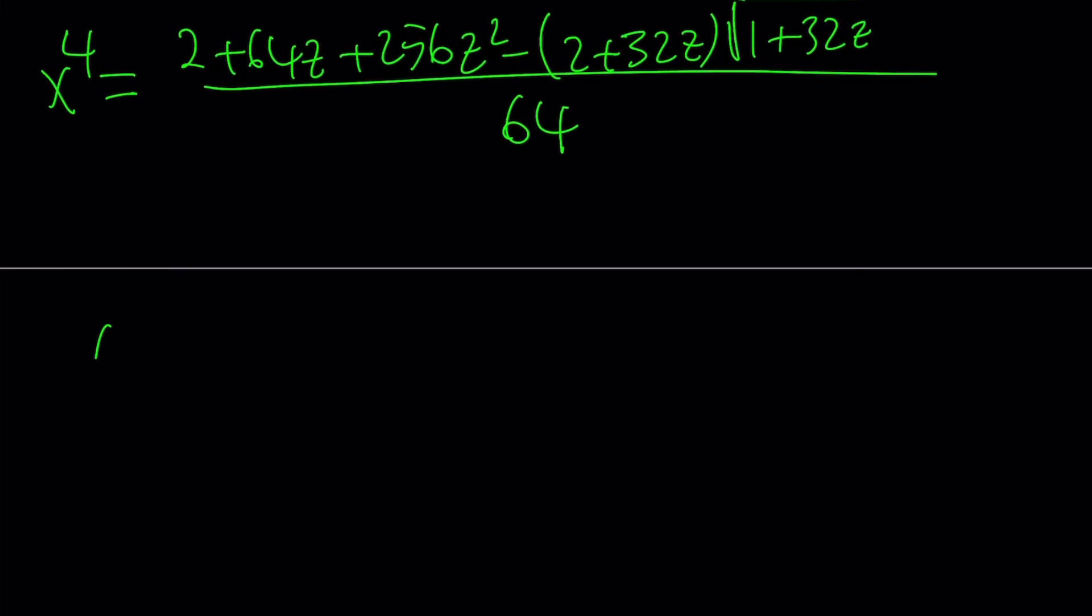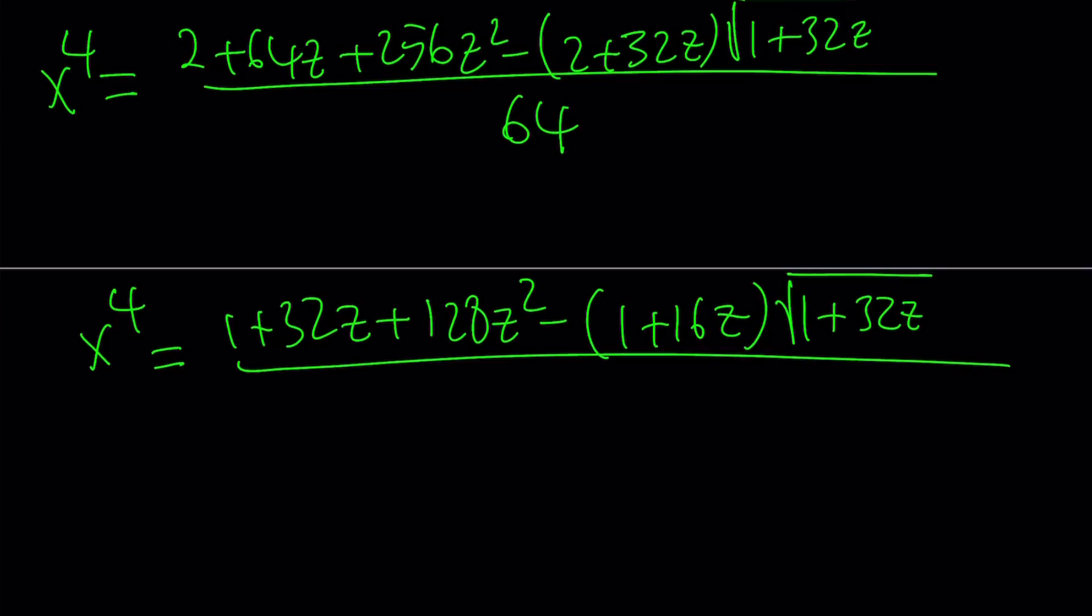This can be simplified. x to the 4th can be written as 1 plus 32z plus 128z squared minus 1 plus 16z, all multiplied by the square root of 1 plus 32z. I just multiplied the top and bottom by 2 and simplified my expression.